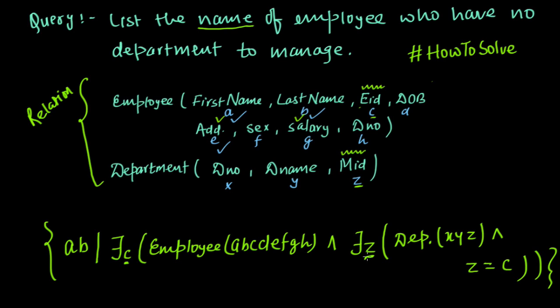There exists some z for which z equal to c. It means for this c, for this employee id, there exists some z that is some manager id where this manager id is equal to employee id. I mean there exists a department for which this employee is a manager.